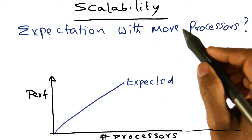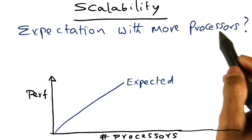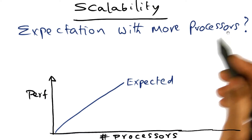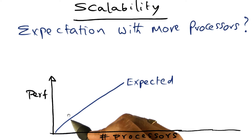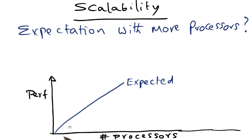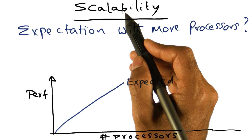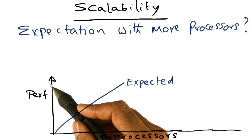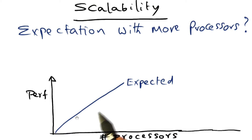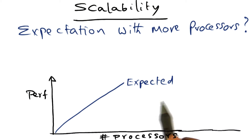As a programmer, you have a certain expectation as you add more processors to the system. Your expectation is natural — if you add more processors, your performance should go up. This is the expectation, and this is what is called scalability: that the performance of a parallel machine is going to scale up as you increase the number of processors. Reasonable to expect that.